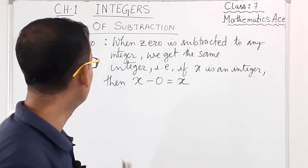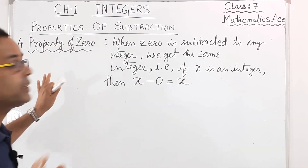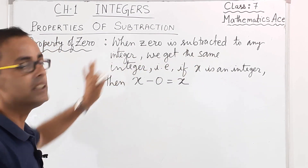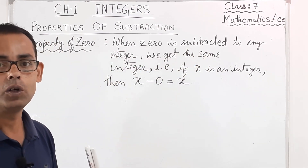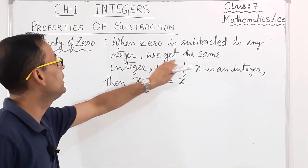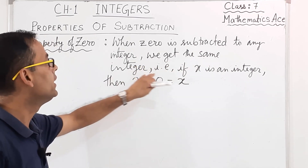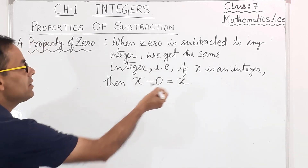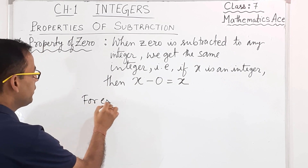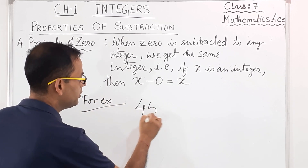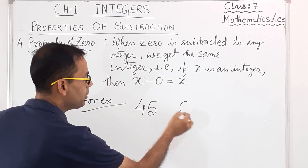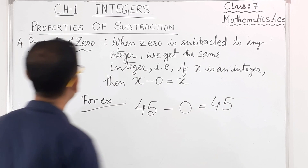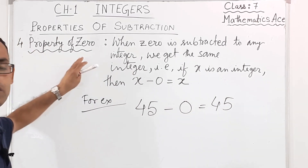The fourth property is the Property of Zero. When 0 is subtracted from any integer, we get the same integer. That is, if X is an integer, then X minus 0 equals X. For example, 45 minus 0 equals 45. This is the Property of Zero.